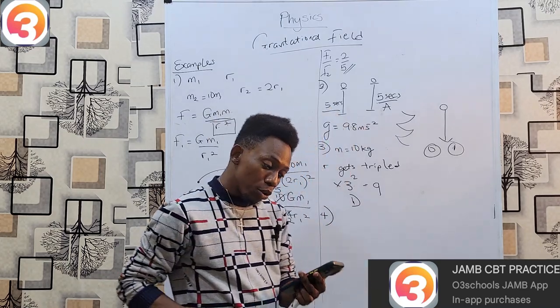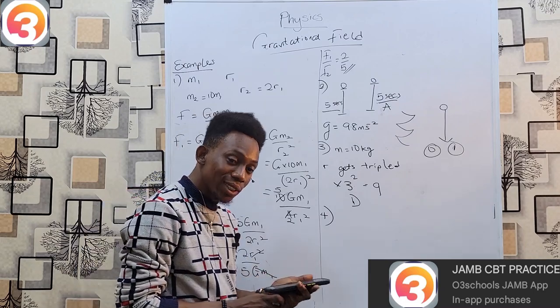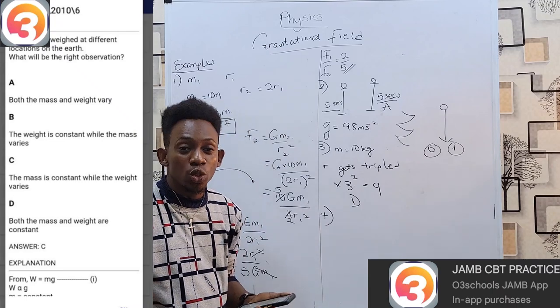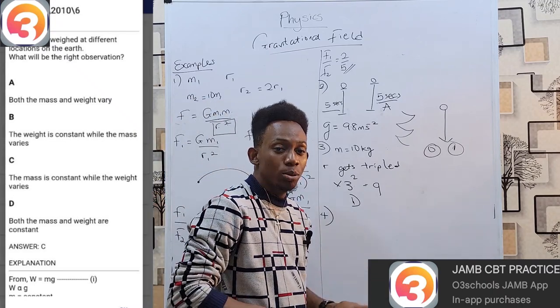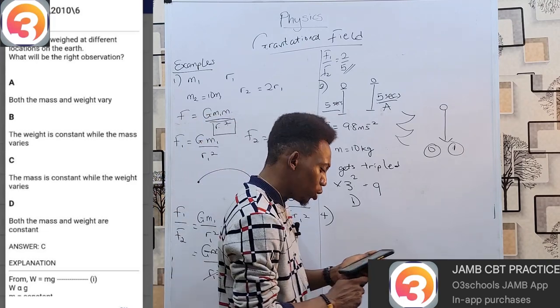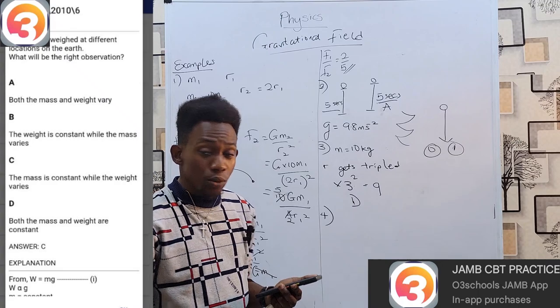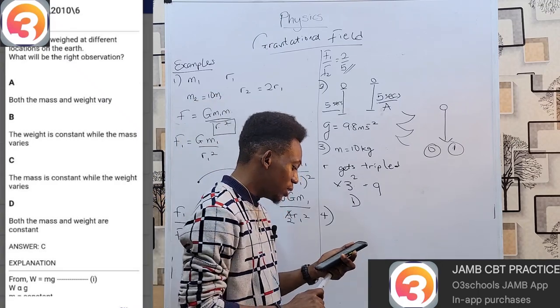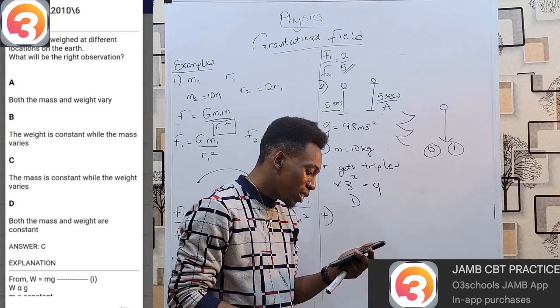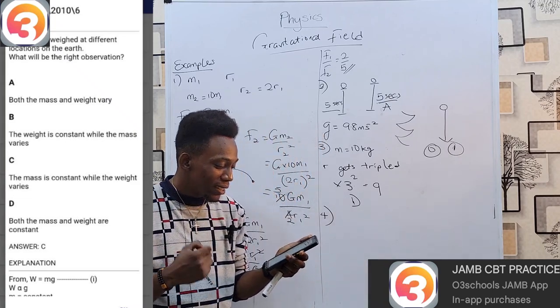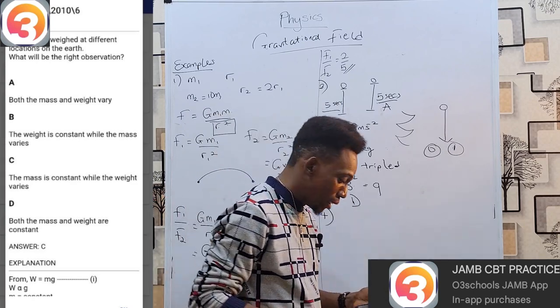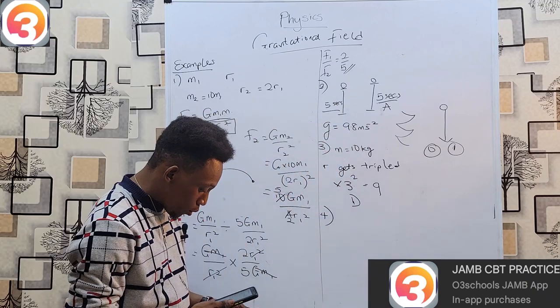Question four. We are getting this from 2010 question 6. As you can see in your app, this question states: an object is weighed at different locations on earth. What will be the right observation? Similar objects weighed at different locations - option A, both the mass and weight vary. As we've learned previously, mass is always constant and weight changes because g changes from place to place, which means that automatically we must know our answer is C: mass is constant and weight varies. So no calculation, just have to think a little bit.